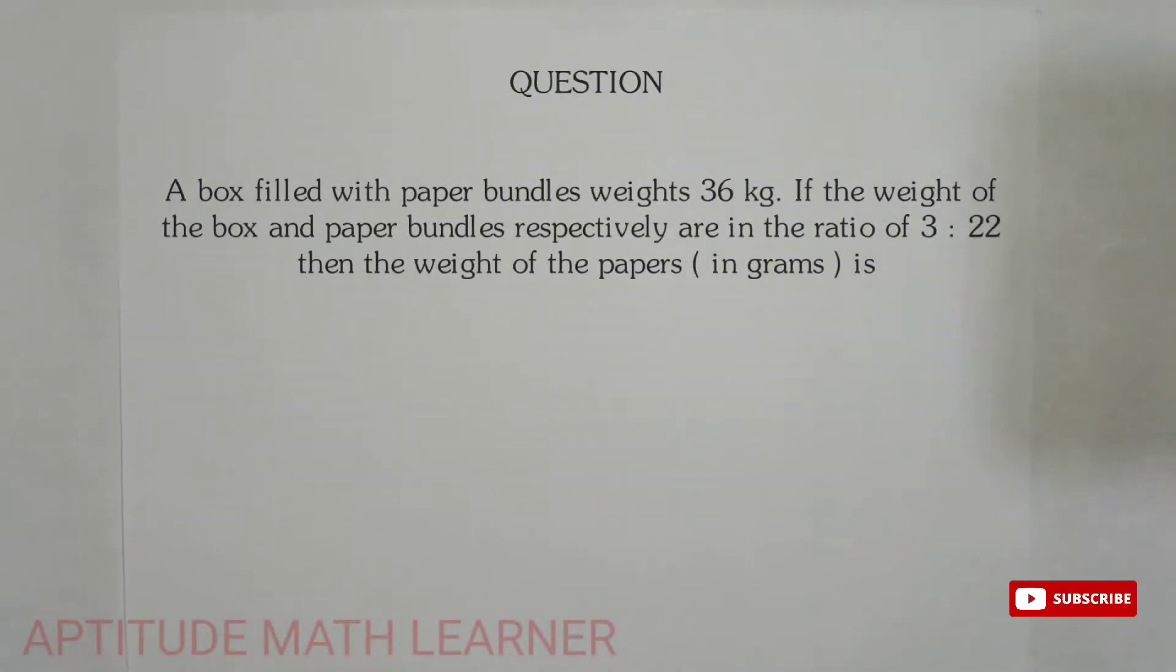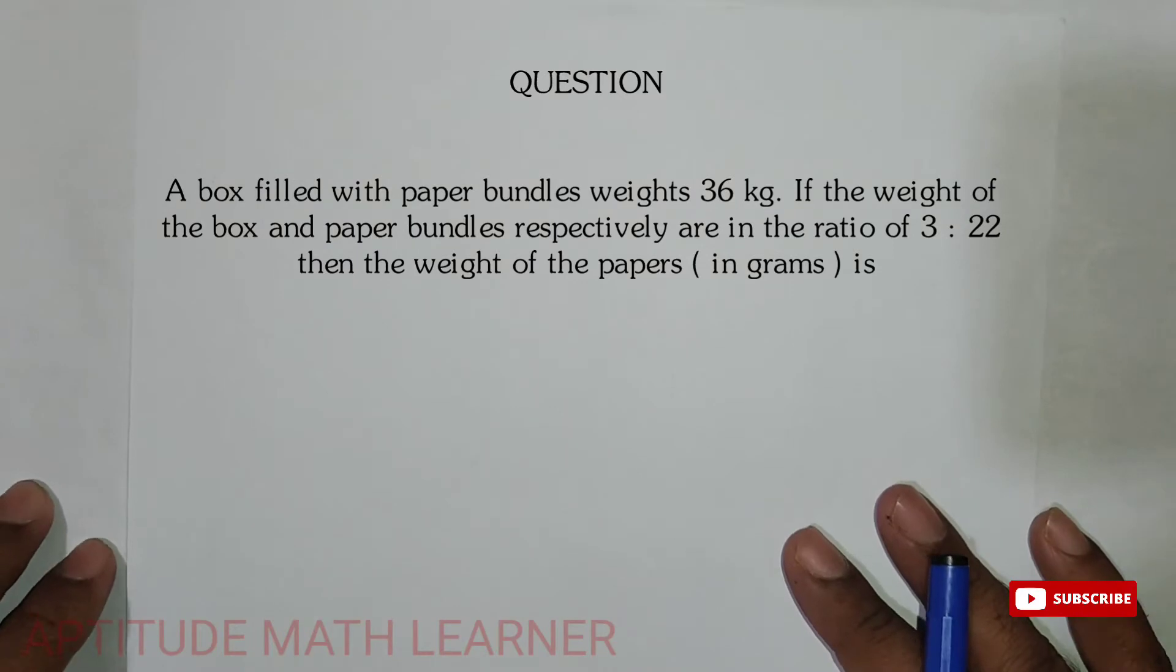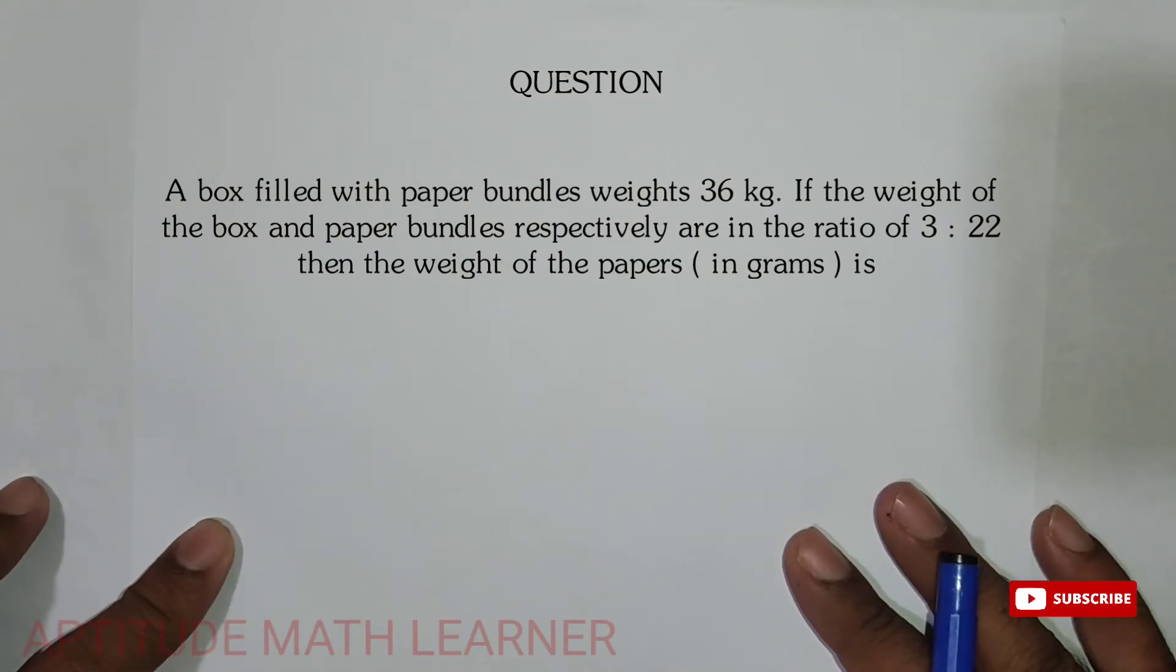Hello and hi to our YouTube channel Aptitude Math Learner. So guys, today we are having the question that is: a box filled with paper bundles weighs 36 kilograms. If the weight of the box and paper respectively are in the ratio 3 is to 22, then find the weight of the paper in grams.